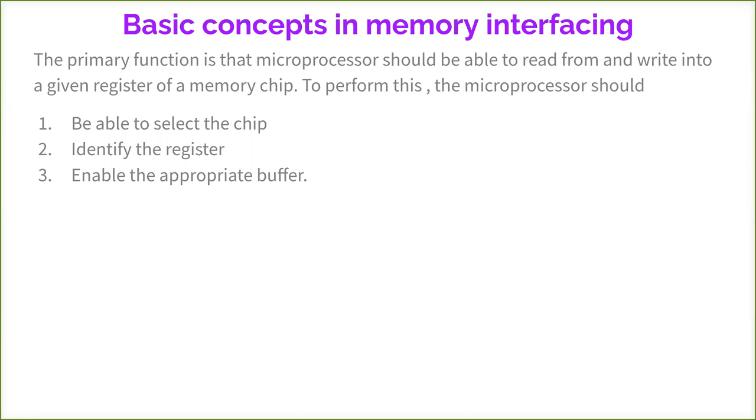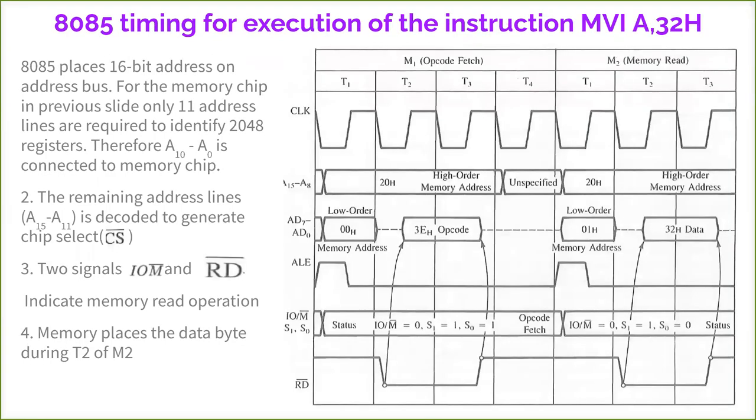The selection of a particular chip and then identify the register within the chip. It has to identify a particular register, then enable the appropriate buffer. Once it has selected whether a reading buffer or output buffer or the input buffer has to be enabled. Basically, three functions are very important. First, you select the correct chip, then identify the respective register, then enable the appropriate buffer, whether output buffer or input buffer.